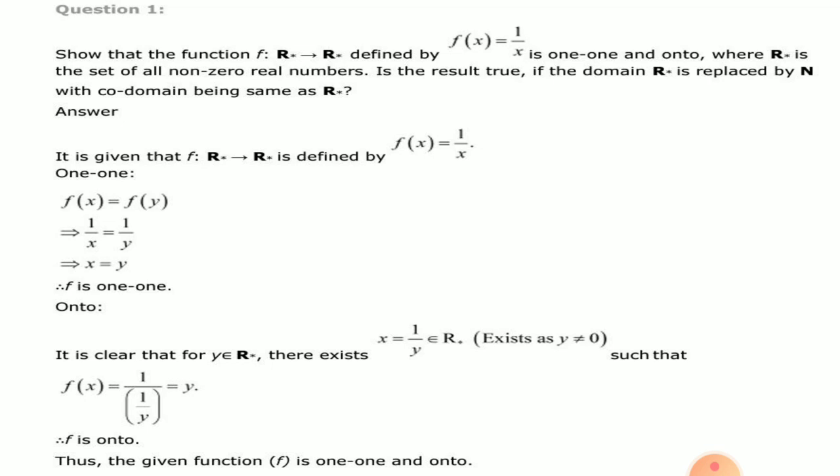Next, the domain R* is replaced by N (natural numbers). So consider g from N to R*, defined by g(x) = 1/x. Similarly, g(x) = g(y) implies 1/x = 1/y, therefore x = y. So g is a one-one function.